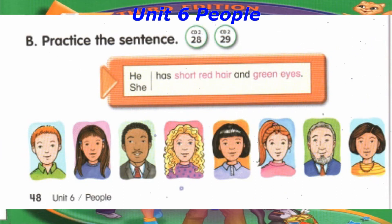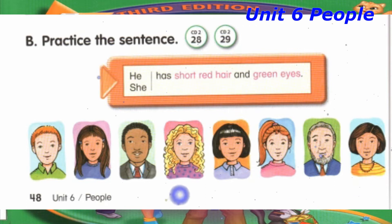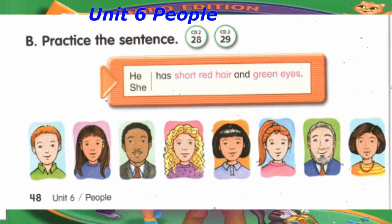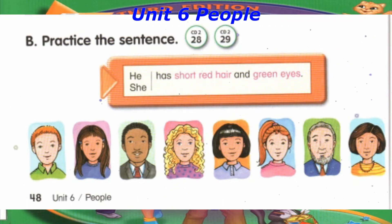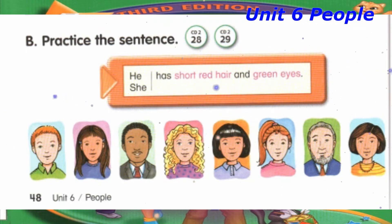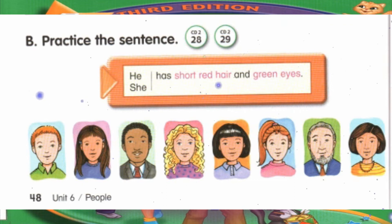Number 7: He has short gray hair, blue eyes, and a beard. Number 8: She has short brown hair and brown eyes.